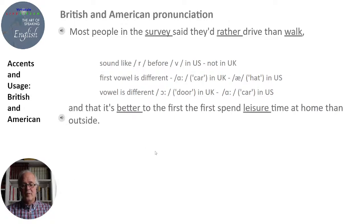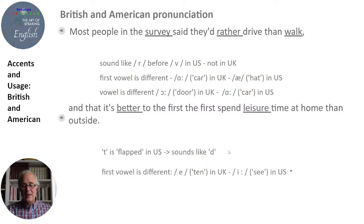'And that it's better to spend leisure time at home than outside.' — 'And that it's better to spend leisure time at home than outside.' They focus on the words 'better' and 'leisure.' The T is flapped in American: 'better' in UK versus 'better' in US. And we have 'leisure' in the US versus 'leisure' — very soft — in British English.